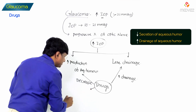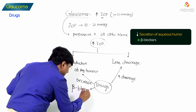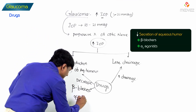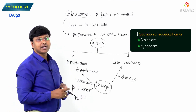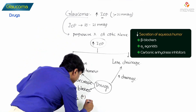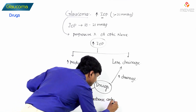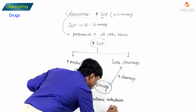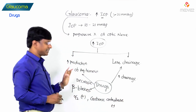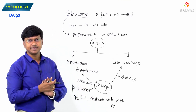The group of drugs which will decrease the secretion of the aqueous humor are: number one, beta blockers — that is the very important group of drugs used in the treatment of glaucoma; apart from that we have the alpha-2 agonists; and then we have carbonic anhydrase inhibitors. These are the drugs which will decrease the aqueous humor production.